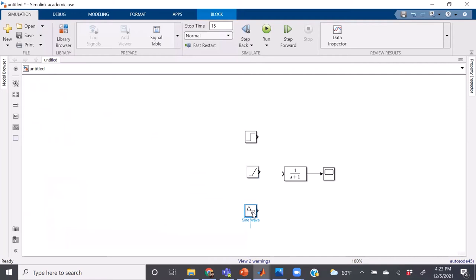Let's just pretend that we're going to do a step input right now. I will drag the arrow from step input into the transfer function, and you will have the complete model connected.